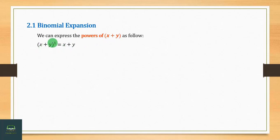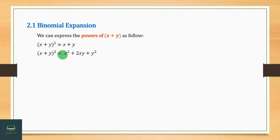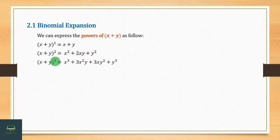x plus 1 to the power 2 equals x squared plus 2x plus 1 squared. x plus 1 to the power 3 equals x cubed plus 3x squared plus 3x plus 1 cubed.